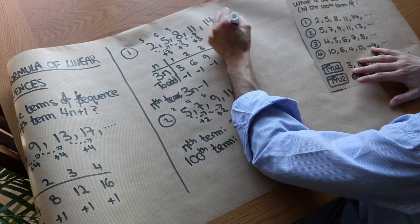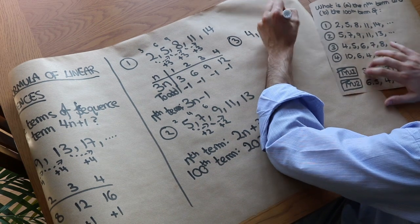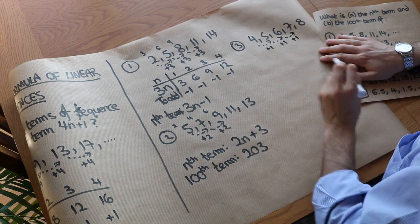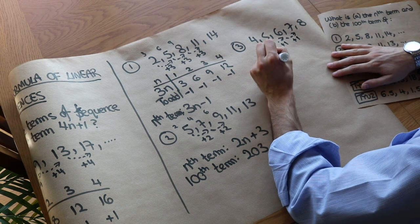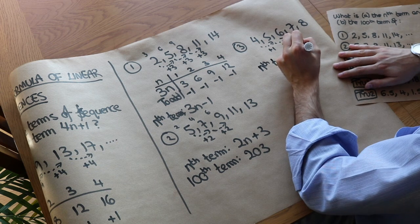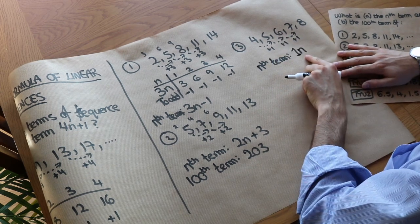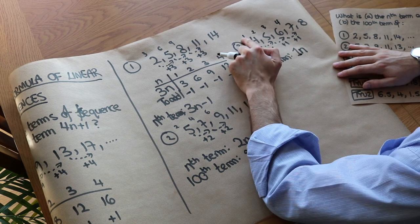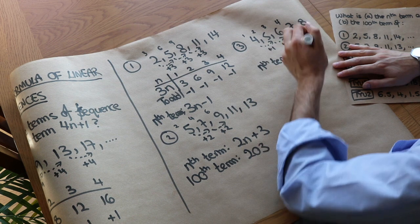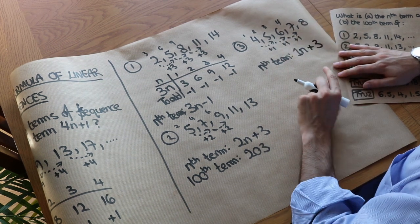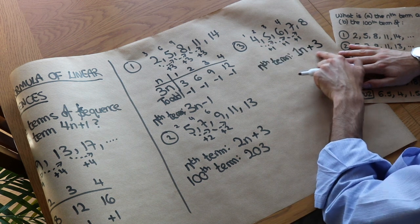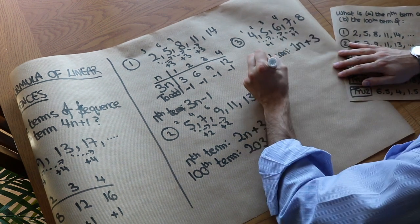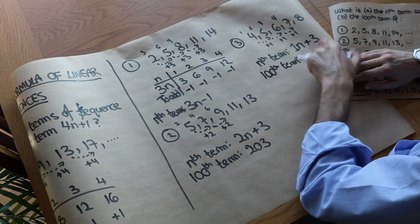Third sequence: 4, 5, 6, 7, 8. Let's try this one mentally. We're adding 1 each time, so the nth term formula starts with 1n, which is the same as just n. And 1n gives us the 1 times table: 1, 2, 3, 4. What do we need to add to get to the correct terms? We need to add 3. So it's going to be n plus 3. We can check: the third term is 1 times 3 plus 3 equals 6, and we can see the third term is indeed 6. The 100th term is 1 times 100 plus 3 equals 103.